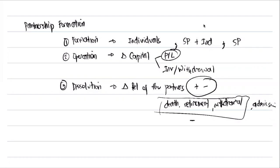In admission, a new partner comes into the partnership, resulting in an increase of partners. The last cycle in the life of a partnership is liquidation. The difference between dissolution and liquidation: in dissolution, there is only a change of relationship among partners — it does not mean termination of the business. A partner can leave while the business continues. In liquidation, you terminate the partnership business.